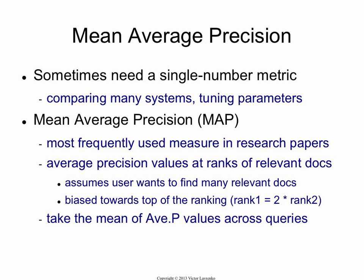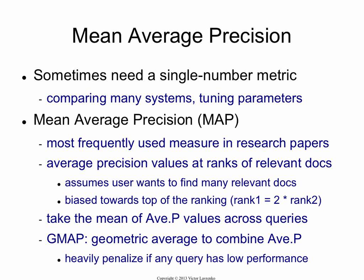Once you compute the average precision, you just average it across a bunch of queries — usually using the arithmetic average. There is a variant called GMAP, that's geometric MAP. Here, you take average precision values as before and average them geometrically: multiply them together and take the nth root. What this does is penalize poor performance — it makes sure you perform reasonably well on every query. Even if you have one query where you're performing badly, your MAP would be a high number, but your GMAP would really drop because that low number hurts the product.